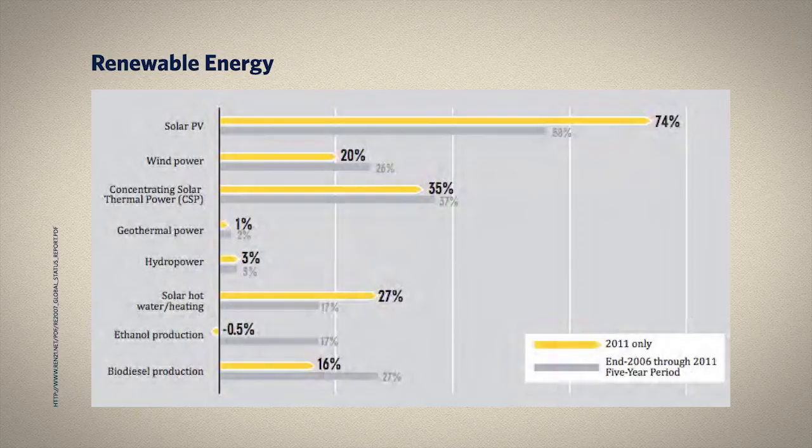Rising oil prices, concerns about climate change, and rapidly evolving technologies have driven significant growth in renewable energy capacity over the last decade. The fastest growing energy technology in the world is solar photovoltaic connected to power grids. For the first time ever, in 2011, solar PV accounted for more new electricity generating capacity in the European Union than any other technology. Policy targets for renewable energy exist in at least 118 countries worldwide. In the EU, the goal has been set to bring the proportion of renewables to 20% of energy demand by 2020. Economies of scale and technological advances have dramatically lowered the cost of both solar and wind resource development.